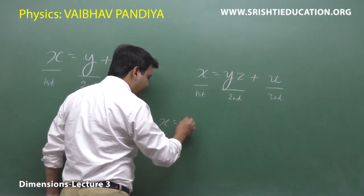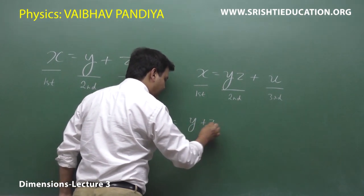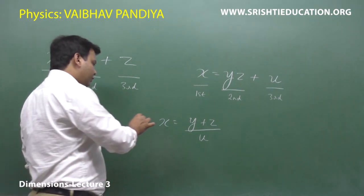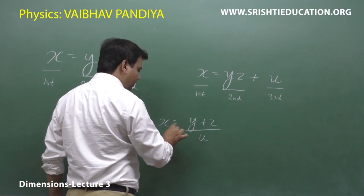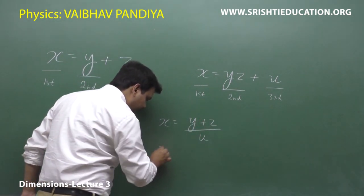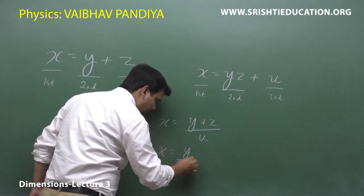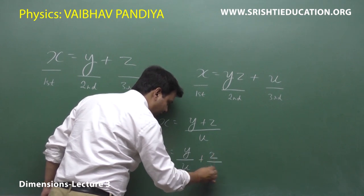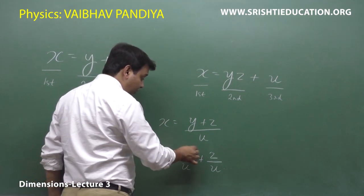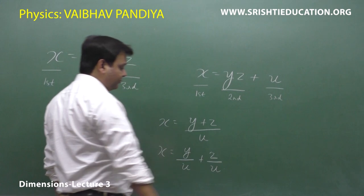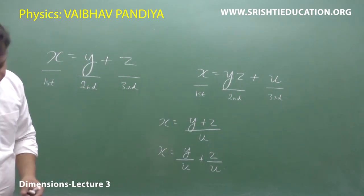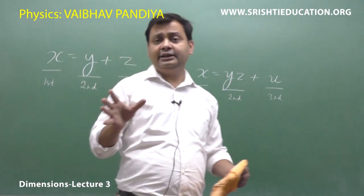Suppose you write the equation x equals y plus z divided by u. You can split the RHS: y divided by u, plus z divided by u. So the first term is x, the second term is y/u, and the third term is z/u — giving us three terms total. This clarifies how to identify different terms in any equation.